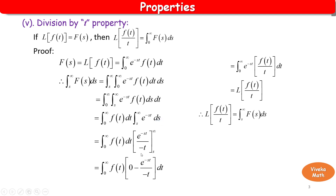Integrating e to the power minus st with respect to s gives e to the power minus st divided by minus t. Applying the limits: the upper limit is infinity, and e to the power minus infinity equals 0. Simplifying, we get the integral from 0 to infinity of e to the power minus st times f(t) by t, grouped together, times dt. By the definition of Laplace transform, this is L of f(t) by t. Therefore, finally, L of f(t) by t is equal to the integral from s to infinity of F(s) ds.